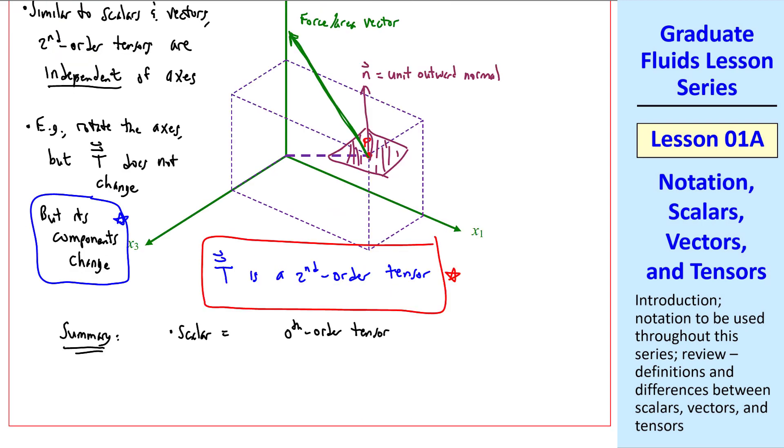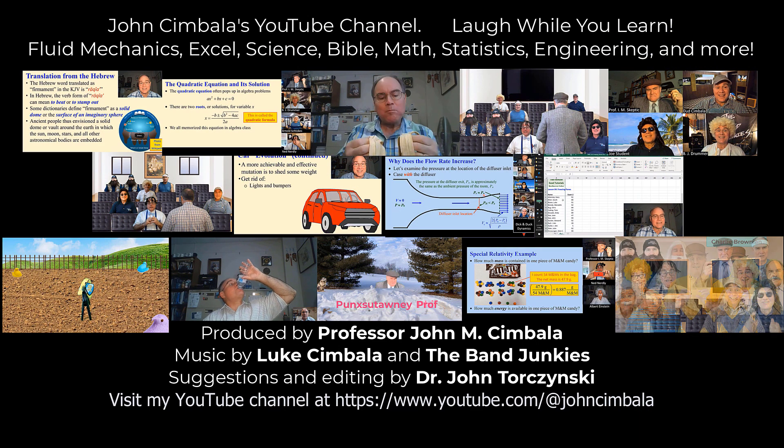So in summary, a scalar is a zeroth-order tensor, a vector is a first-order tensor, and, of course, a second-order tensor is a second-order tensor. You can extend this to tensors of higher order. You can have third, fourth, etc. ordered tensors. Thank you for watching this video. Please subscribe to my YouTube channel for more videos.